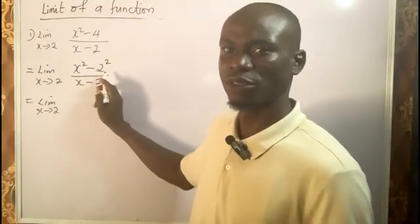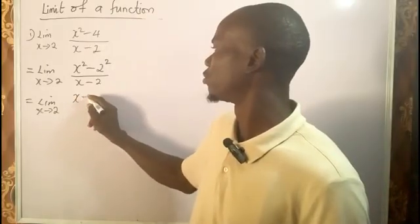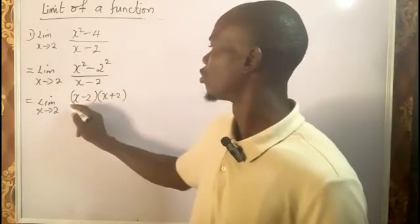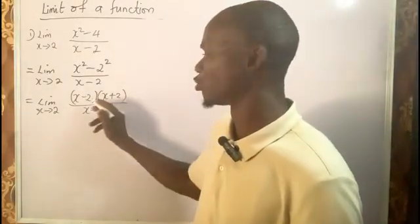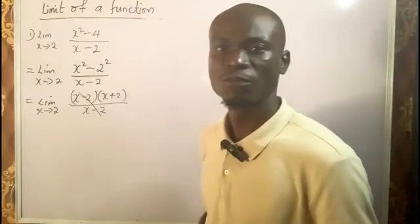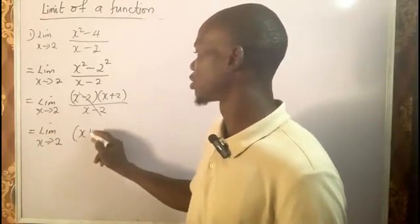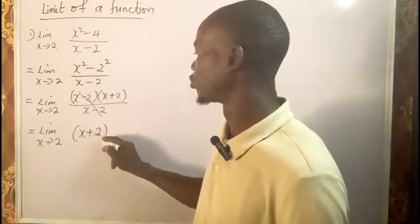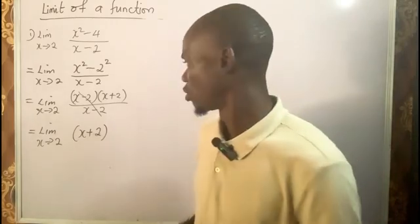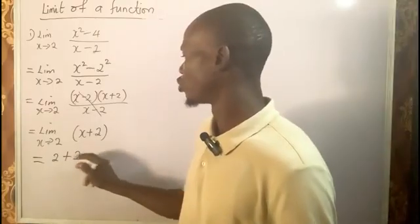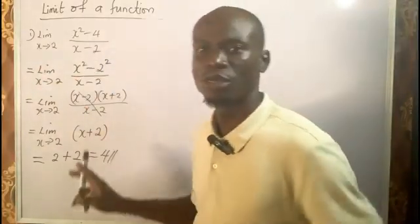Using the difference of two squares — a² minus b² equals (a minus b)(a plus b) — we can write the numerator as (x minus 2)(x plus 2) all over (x minus 2). The (x minus 2) terms cancel, leaving limit as x tends to 2 of (x + 2). Substituting 2: we get 2 plus 2 which equals 4. So the limit as x tends to 2 of (x² minus 4) over (x minus 2) is 4.